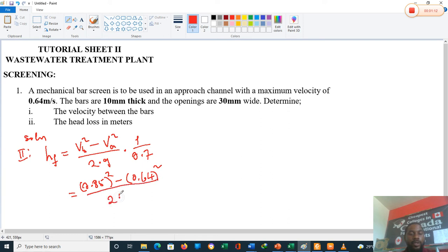two into 9.8, times one over 0.7. So when you compute this, you get the head loss of the channel.